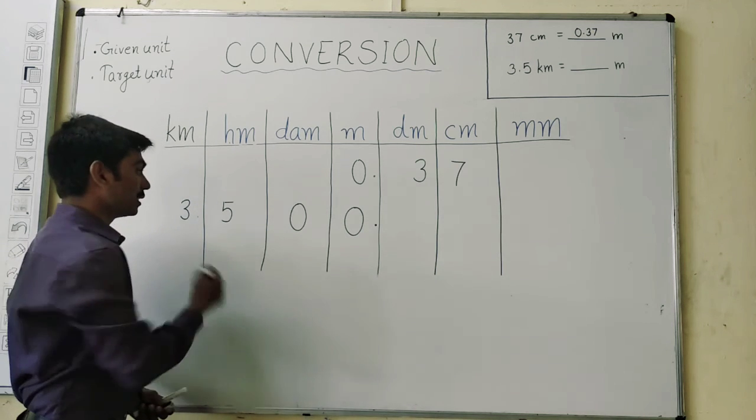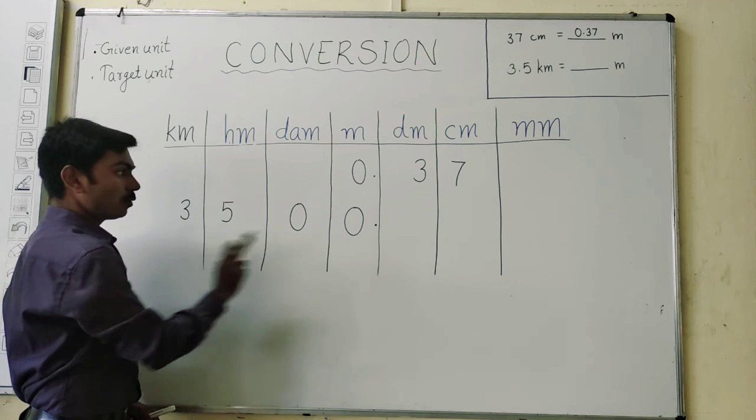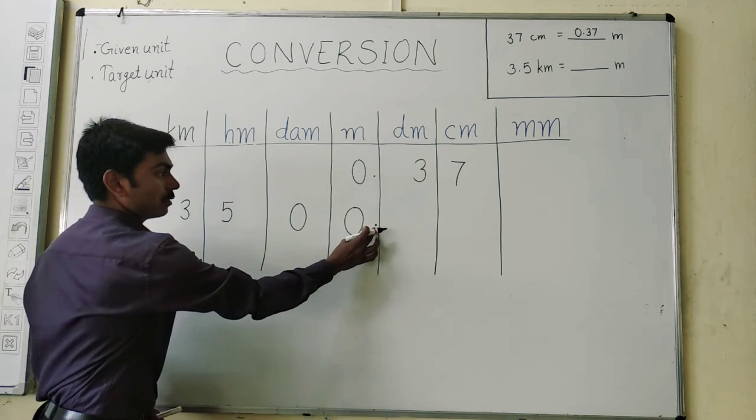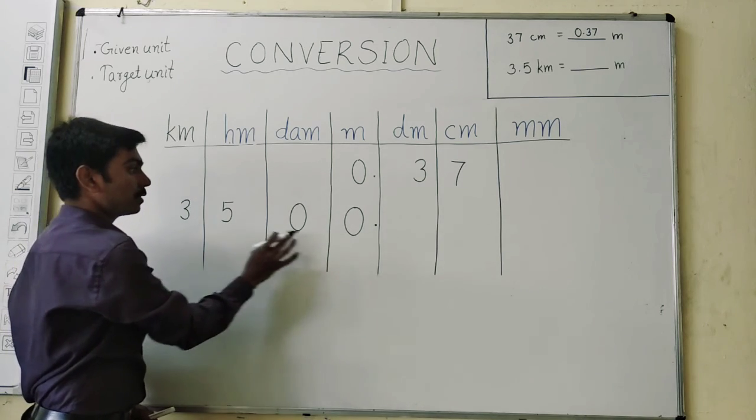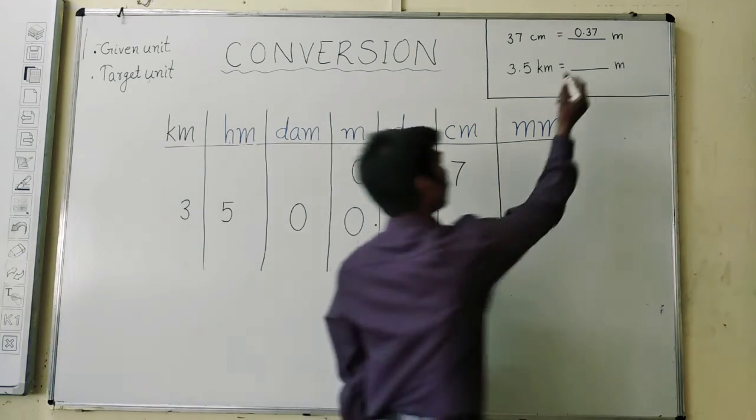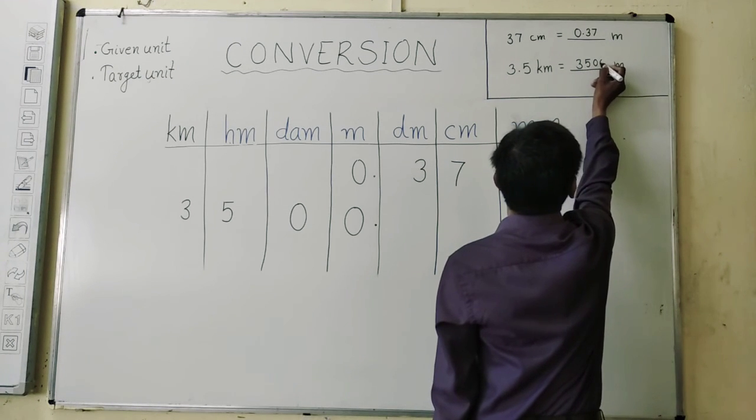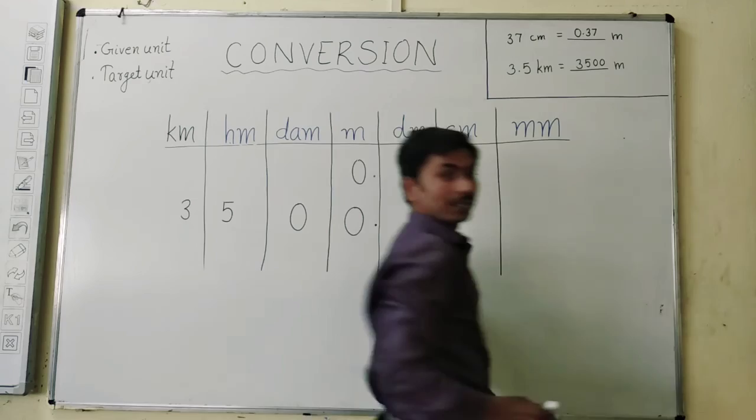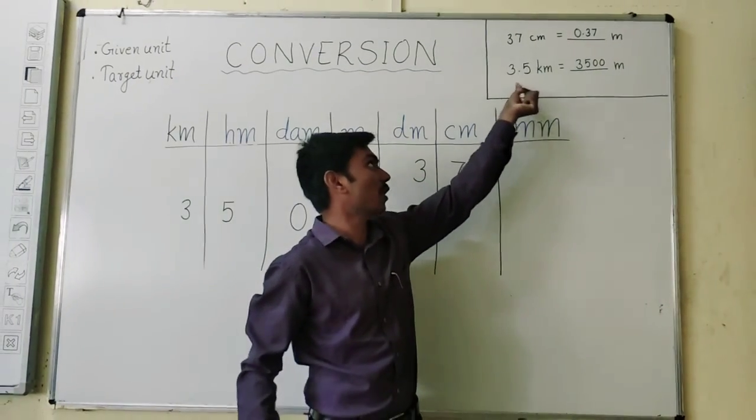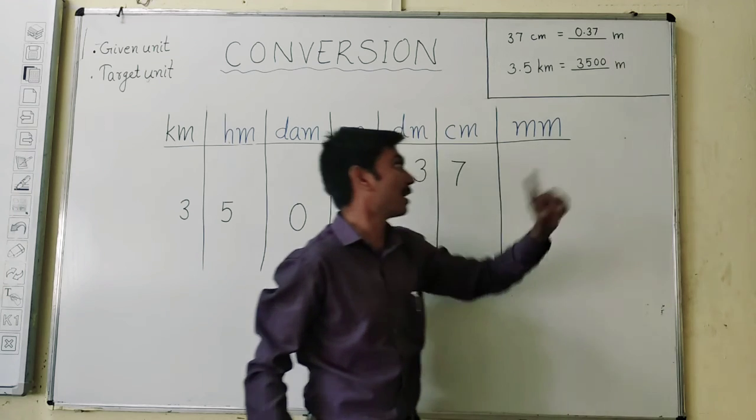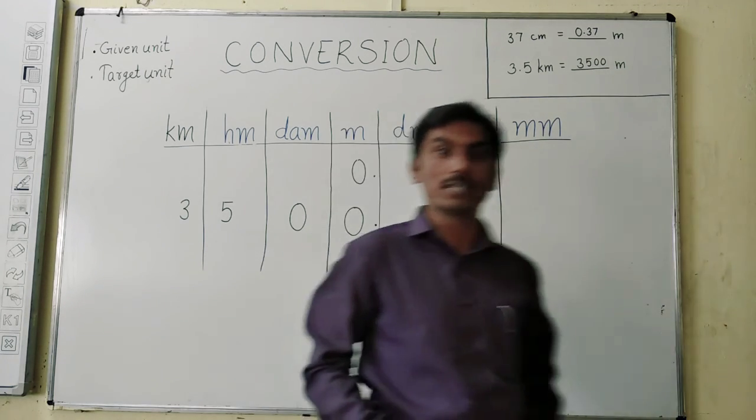And that's the answer. Our decimal has been shifted right to the target unit. So 3,500 meter. This is the required answer. Means when we convert 3.5 km into meter, our answer will be 3,500 meter. Hope you have understood it.